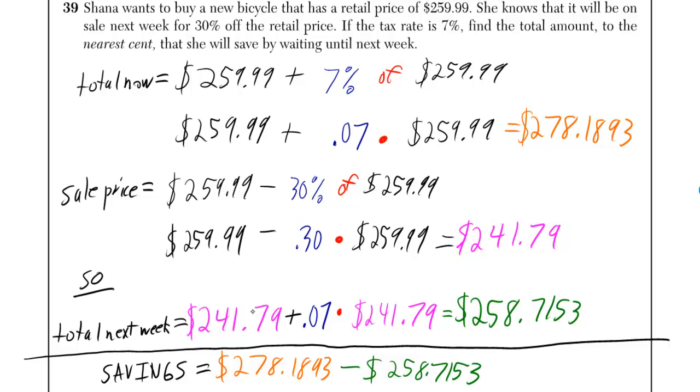What about the total next week? Well, the total next week, you first need to find the sale price, and then we're going to add 7% to the sale price. You only do the tax after you've got the sales price. That's the way it works in real life. You do not get taxed on whatever the price of the item was before a discount. You only get taxed on whatever the discounted price is.